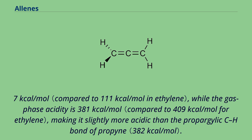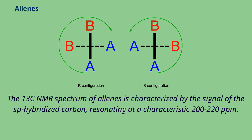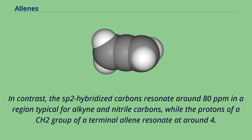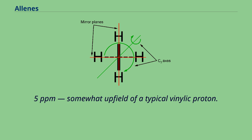The 13C NMR spectrum of allenes is characterized by the signal of the sp-hybridized carbon resonating at a characteristic 200 to 220 ppm. In contrast, the sp2-hybridized carbons resonate around 80 ppm in a region typical for alkyne and nitrile carbons, while the protons of a CH2 group of a terminal allene resonate at around 4.5 ppm, somewhat upfield of a typical vinylic proton.